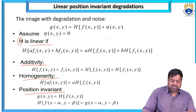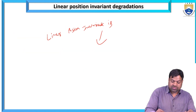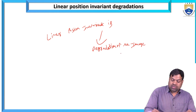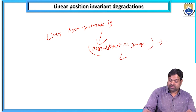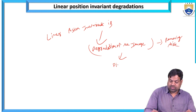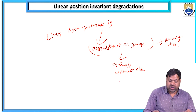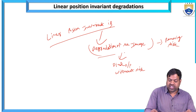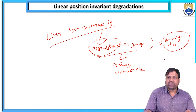A linear position invariant system is essentially a homogeneous function. In the context of image degradation, when we need a degradation process, the final output is without noise. The linear position invariant degradation means: if you are removing the noise in the original image, that is the degradation process.